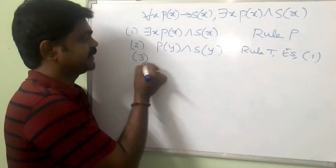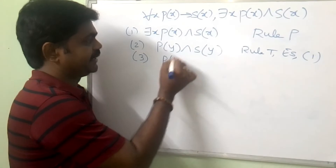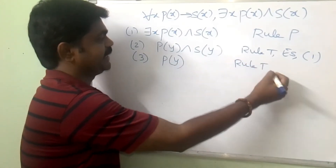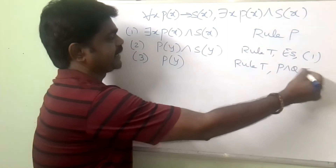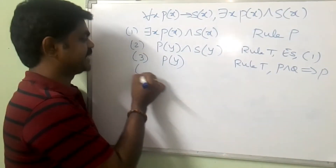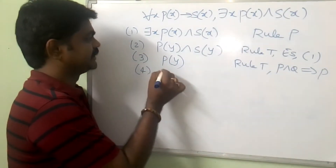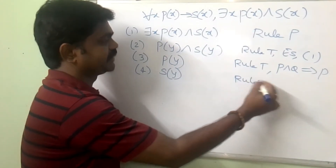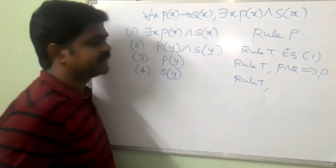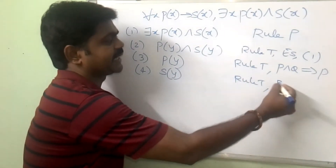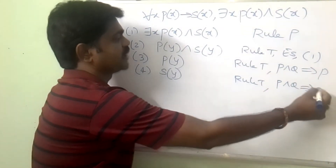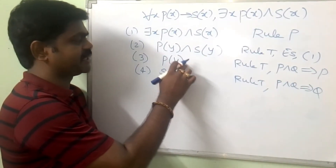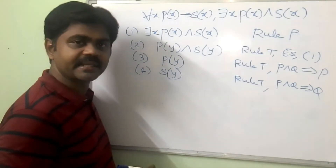So step 3: I will get P of Y — rule T — since from P and Q I can write it as P. In the same manner, step 4: I can get S of Y — rule T — since from P and Q I can write it as Q. So from P of Y and S of Y, I am writing P of Y one time and S of Y another time.